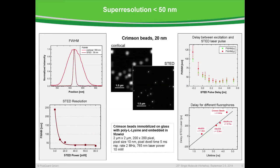I'd like to continue with some proof-of-principle measurements. First we look at small fluorescent beads — crimson beads, 20 nanometers in diameter — and look at the confocal and the STED image, which shows much enhanced resolution. If you look at the cross-section of a single bead, we see more or less diffraction-limited resolution at 260 nanometers, whereas in the STED image we have a very sharp peak of 28 nanometers. The resolution of the STED microscope is strongly coupled with the STED power that we use.